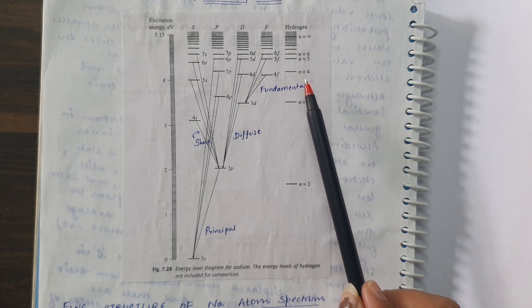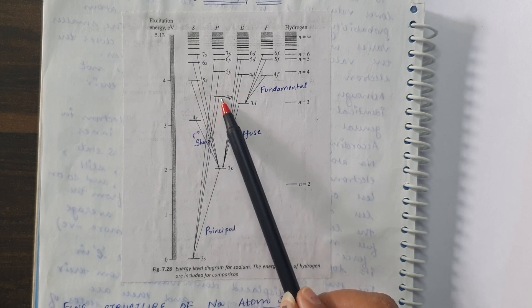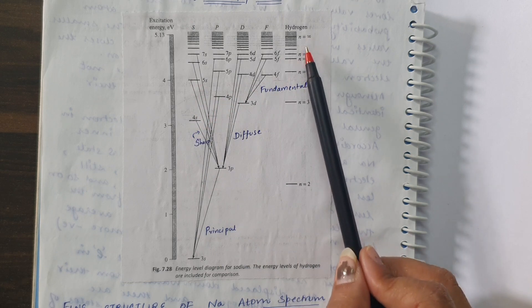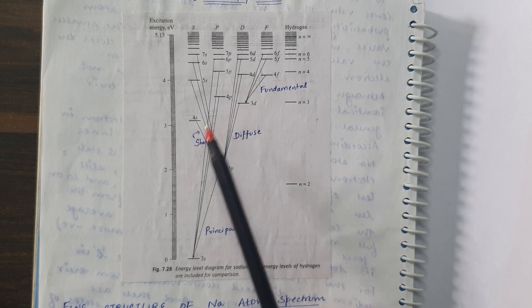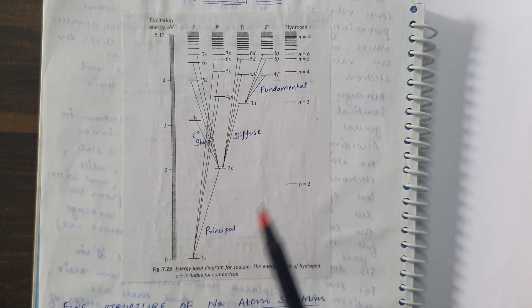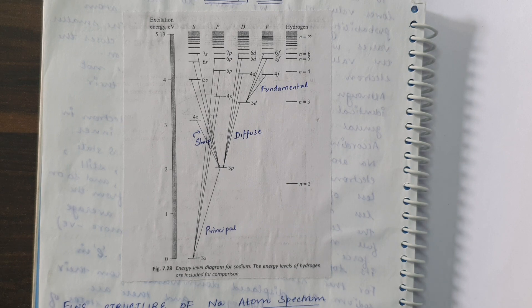When comparing 4S and 4P of sodium with 4S and 4P of hydrogen, they lie way below. So these discrepancies for low values of L exist because of the shielding effect. This is all about the atomic spectra of sodium atom. In the next lecture, we will discuss the fine structure of sodium atom.